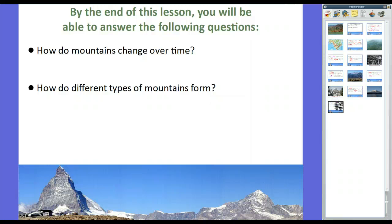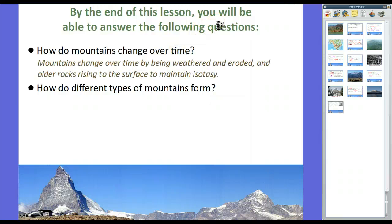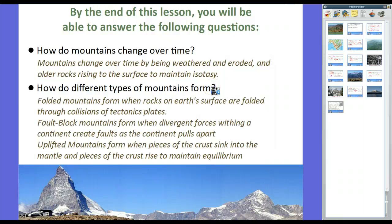By the end of this lesson, you should have been able to answer: how do mountains change over time? Mountains change by being weathered and eroded, with older rocks rising to the surface to maintain isostasy. How do different types of mountains form? Folded mountains form when rocks are folded through collisions of tectonic plates. Fault block mountains form when divergent forces within a continent create faults as the continent pulls apart. Uplifted mountains form when pieces of crust sink into the mantle and other pieces rise to maintain equilibrium — Mount Whitney is a good example. Volcanic mountains operate under the same principle. Hope it wasn't too boring — if you have any questions, feel free to let me know. Thanks for watching.